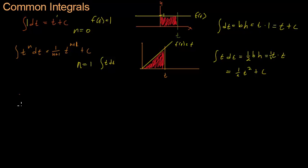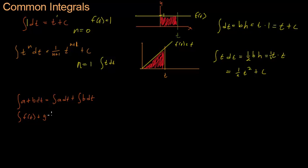So what do we have next? We covered the integral of a plus b dt equals the integral of a dt plus the integral of b dt. That is a really neat formula, but I'm actually going to make it a little more general. Instead of a and b, which are constants, I'm going to use any two functions of t — it can be the integral of t plus t squared, or 1 over t plus anything you want. This rule will apply: the integral of f of t plus g of t dt equals the integral of f of t dt plus the integral of g of t dt.